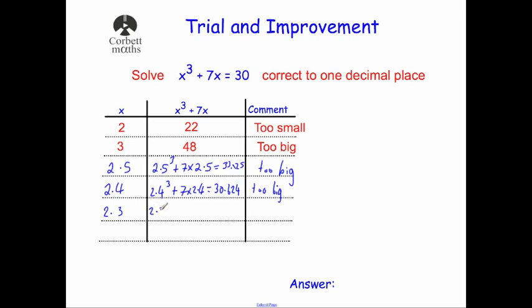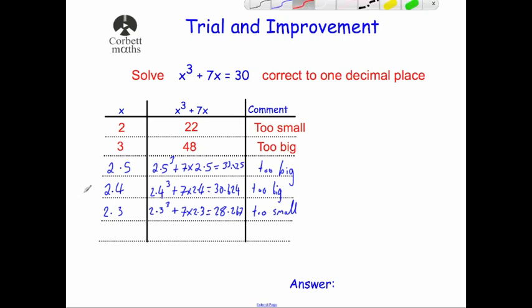So we're going to do 2.3 cubed plus seven times 2.3. We'll do that on our calculator — 2.3 cubed plus seven times 2.3. This time that's equal to 28.267, and that's too small. So we know our answer to one decimal place is going to be either 2.4 or 2.3.